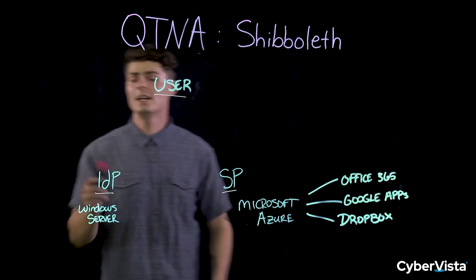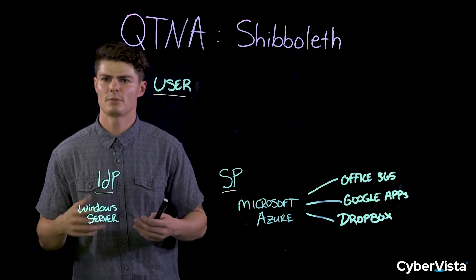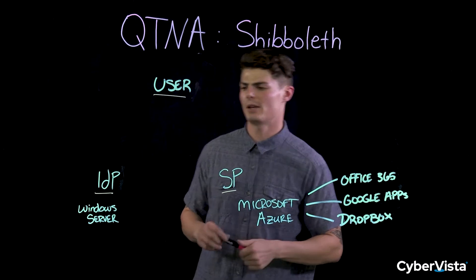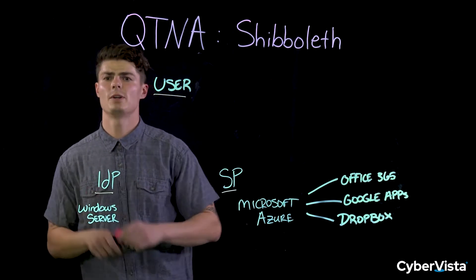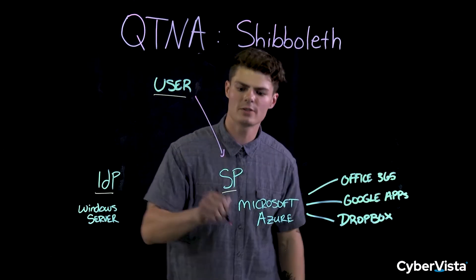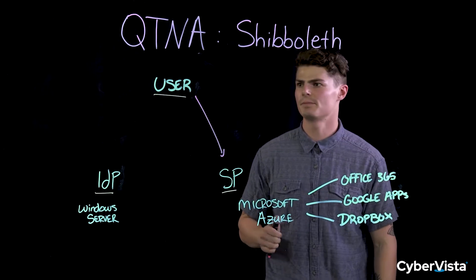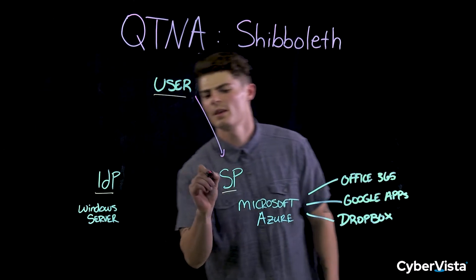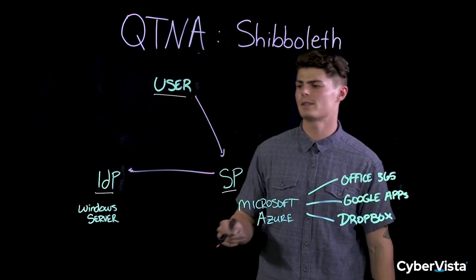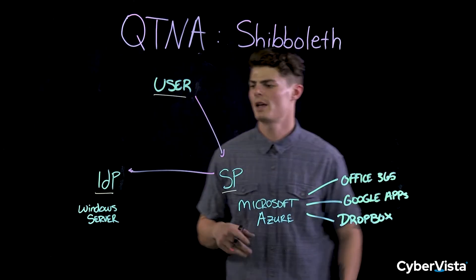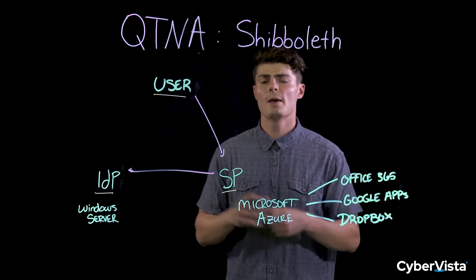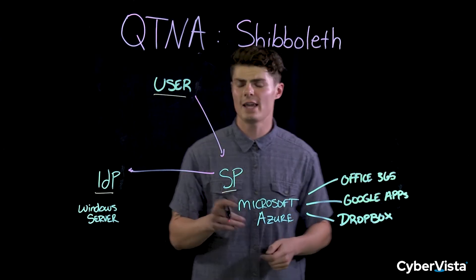Now, the identity provider is what's gonna authenticate me based on the single set of credentials that I try to sign on to Microsoft Azure's homepage — and that's a Windows Server. Single set of credentials to sign on to the homepage. Then the service provider is gonna send an authentication request to the identity provider. The identity provider is then gonna authenticate me or not authenticate me based on the single set of credentials that I gave.